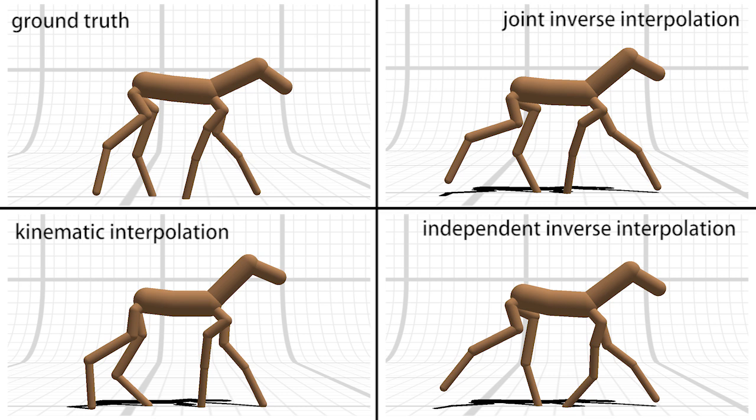Note how in the motion synthesized by kinematic interpolation, the gazelle does not lift its feet sufficiently off the ground. The two methods based on the interpolation of parameters found by Inverse Optimization perform better, but without Joint Inverse Optimization, the gazelle's front knee inaccurately bends toward the end of its contact phase.